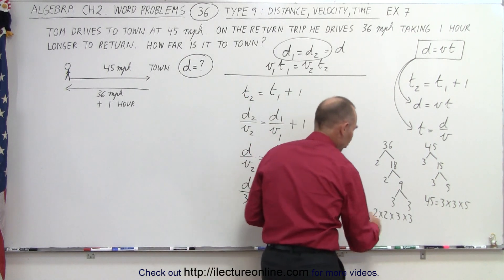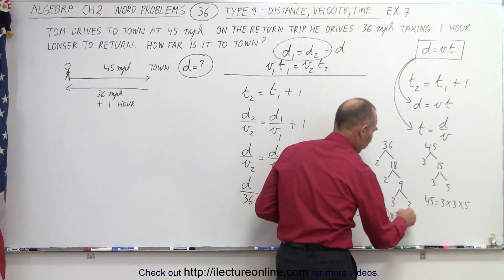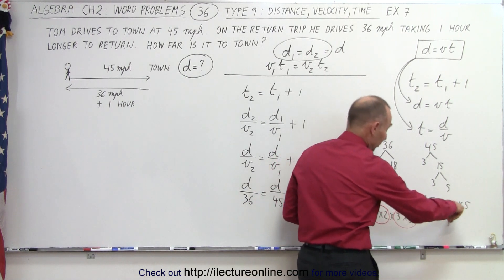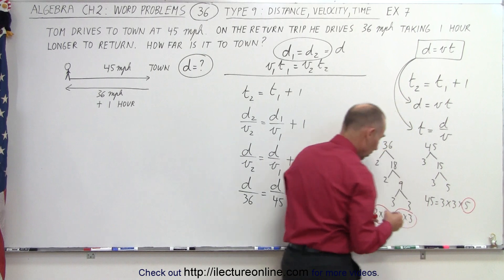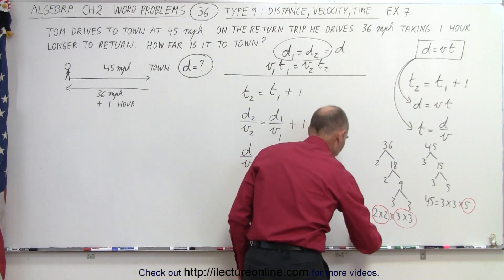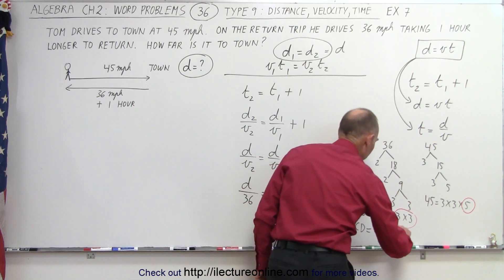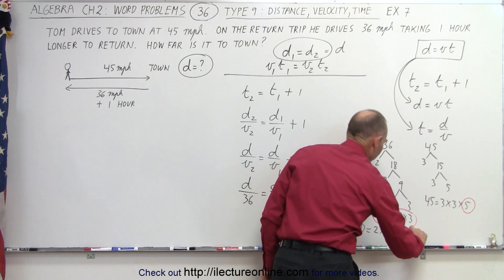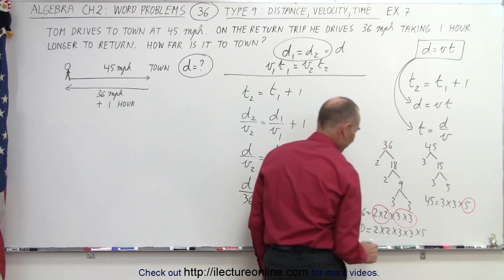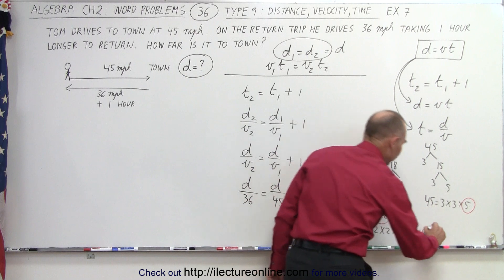We have 2 times 2, so 2 occurs twice here. 3 here occurs twice. It occurs twice again there, but we don't have to repeat. And we have the number 5 once, which means that the LCD, the lowest common denominator, is equal to 2 times 2 times 3 times 3 times 5. 2 times 2 is 4, times 5 is 20, times 9 is 180.